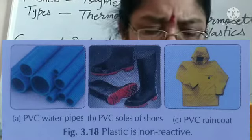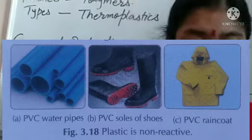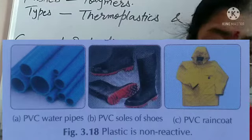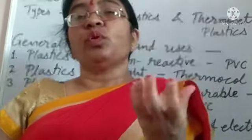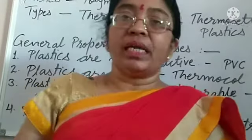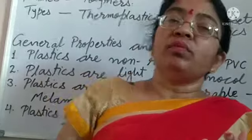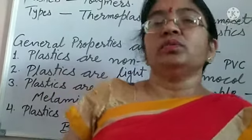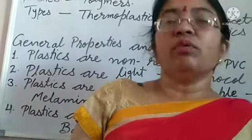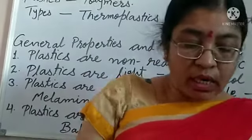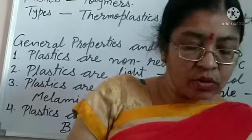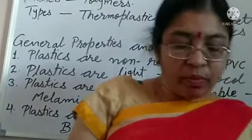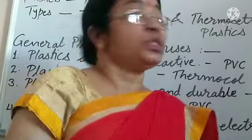Different water tanks and plumbing fittings are made of plastic for this reason. PVC is also used for making soles of shoes because it is tough and comfortable. Different handbags and bathroom curtains can also be made from PVC plastic.